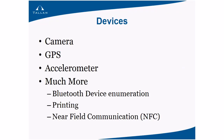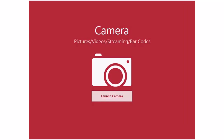Devices are one of the big areas where a website falls short. If you build a website, you can't communicate with Windows 8 devices — no camera, no GPS, no accelerometer, no near-field communication, no Bluetooth, and no USB device enumeration. For GPS and accelerometer there are some HTML5 features available, but the rest are not supported in websites.